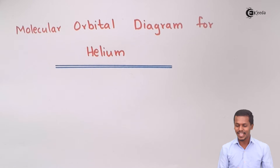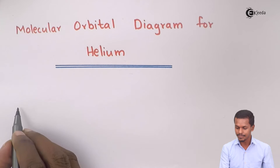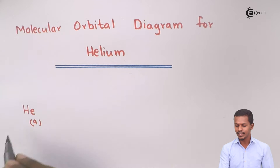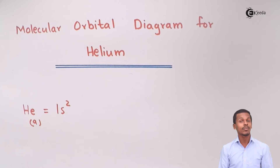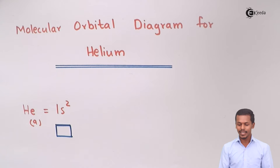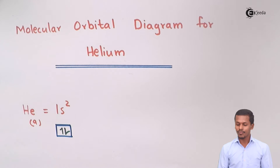This is what we can understand with the help of molecular orbital theory. So suppose if two heliums have been combined with each other, I am talking about the first helium, Helium A. Its electronic configuration is 1s², and the s subshell consists of only one orbital, and that orbital contains basically two electrons.